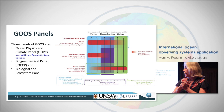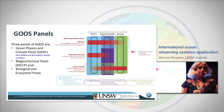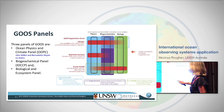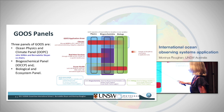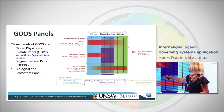GOOSE is divided into three panels: the Ocean Physics and Climate panel — where John Wilkin is co-chair with Bernadette Sloyanne — the Biogeochemical panel, and the Biological and Ecosystems panel. The panels run across Physics, Biogeochemistry, and Biology, and the application areas are Climate, Real-Time Services (operational oceanography), and Ocean Health. The panels and themes are integrated and tightly coupled.